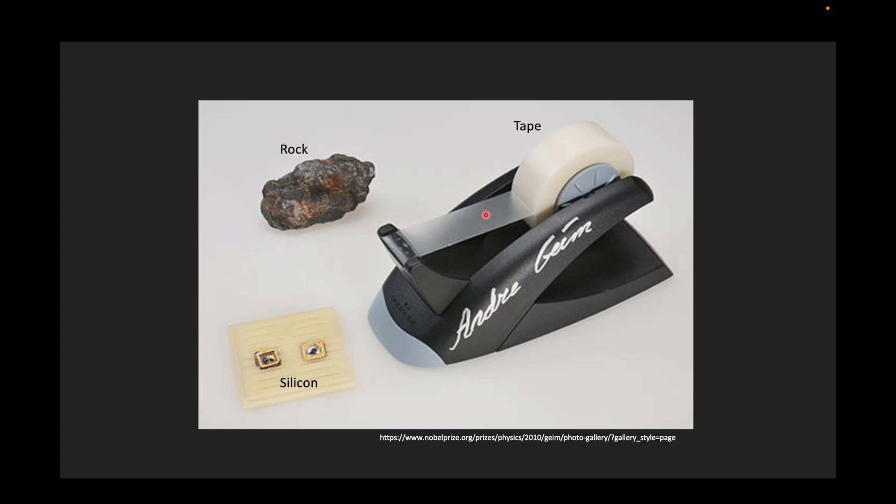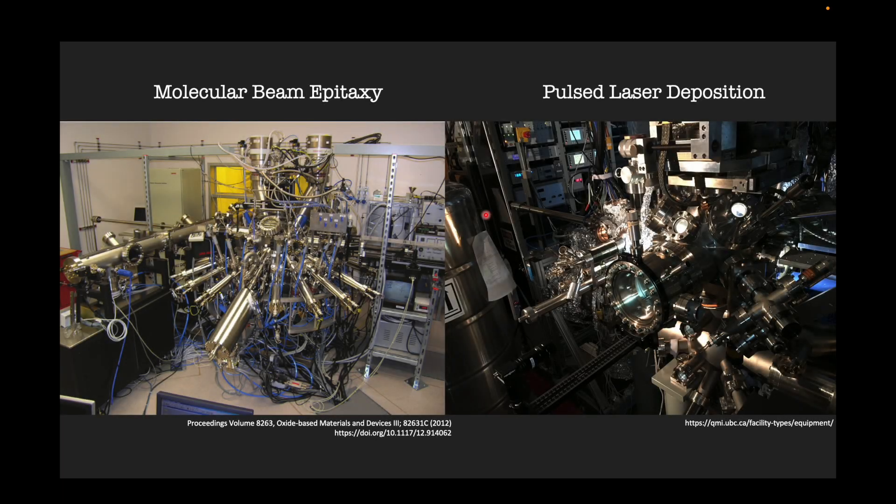The materials are not super expensive and don't require multimillion dollar machines to produce. For example, molecular beam epitaxy or pulsed laser deposition are very cool experimental techniques to produce single crystalline samples, but the initial cost to set up those capabilities take millions of dollars and a lot of resources like cooling water and lots of electricity and ultra-high vacuum, resulting in a rather high barrier for underfunded groups or institutions to get started in.